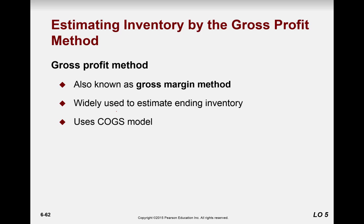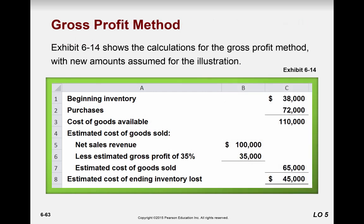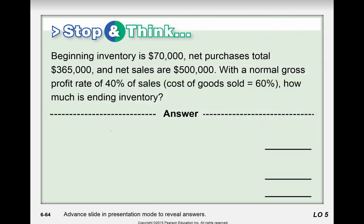When you're estimating inventory, we call that the gross margin method, and it's very extensively used in industry. The calculations show beginning inventory plus purchases equals goods available for sale. Then we estimate: given net sales revenue and assuming a 35% gross profit, we know cost of goods sold is 65% of sales, and from that we can determine the estimated cost of ending inventory.